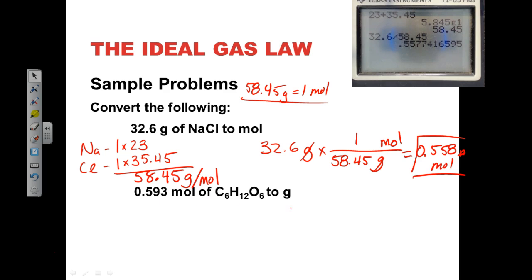And so now we're given moles, and we want to convert that to grams. Well, again, we need the molar mass. So we have carbon. There are six carbons, and each carbon weighs about 12. We have hydrogen, and there are 12 hydrogens, and each one of those weighs about 1. And there are six oxygens, and each one of those weighs about 16.